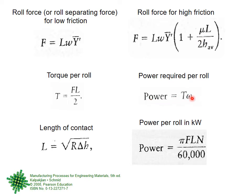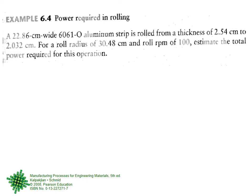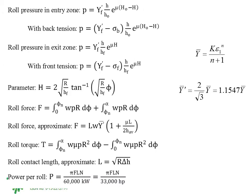Power is torque multiplied by angular velocity, and there is a formula to calculate power in kilowatts using the RPM n of the rolls. We then did a practical example of rolling to find the power required. I summarized all the equations in this chapter about rolling, then selected the equations more directly available to us. I combined both equations: if friction is low, one factor is one; if friction is high, that factor is also included. L is given by one equation, and power is given in both kilowatt and horsepower units.